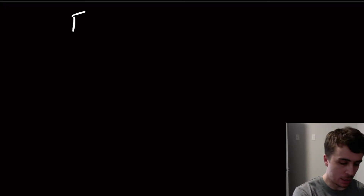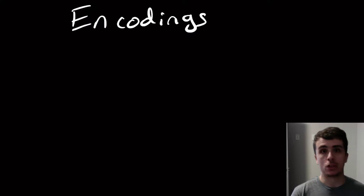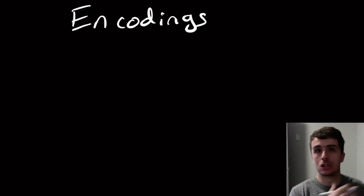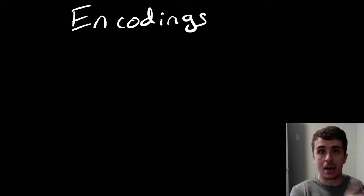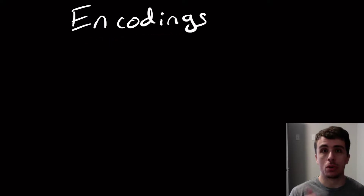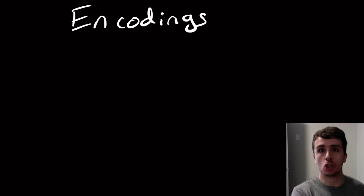Hi and welcome to another edition of Easy Theory. Today we're going to talk about something called encodings. The reason we want to talk about this is that when we were talking about the Church-Turing thesis, we were saying that algorithms are the same thing as Turing machines. So if we can build a Turing machine to do something, then we can say that our computers can do the same thing and vice versa. The purpose of encodings is to make these machines into strings so that we can talk about what those machines can do.